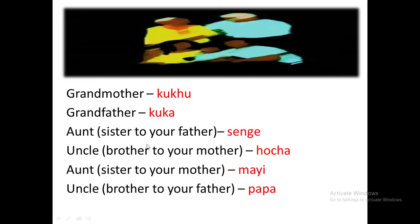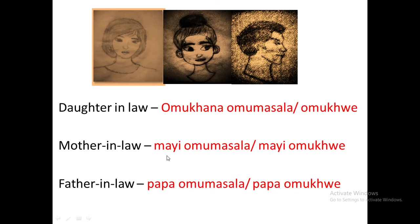Moving on, we have in-laws. There is one simple term for in-law — once you hear it, it means that person is an in-law. Let's start with the daughter-in-law: 'omuhana omusala' — that is a daughter-in-law, meaning the girl married to your son.